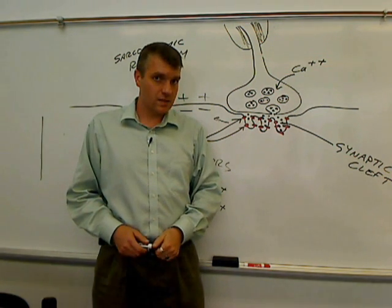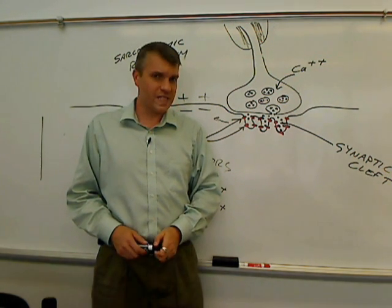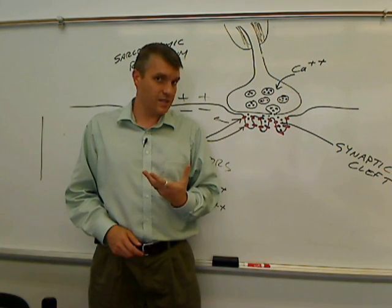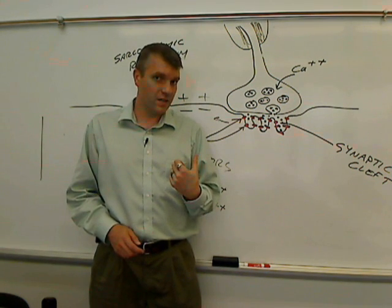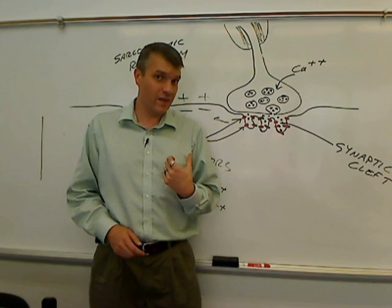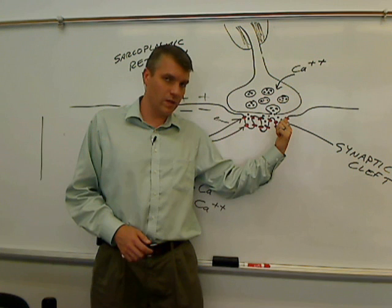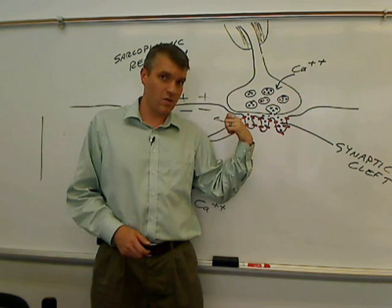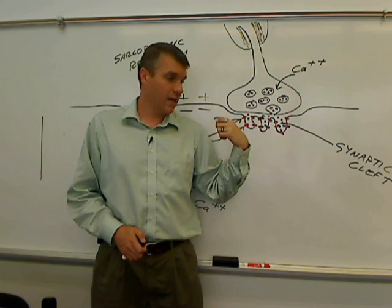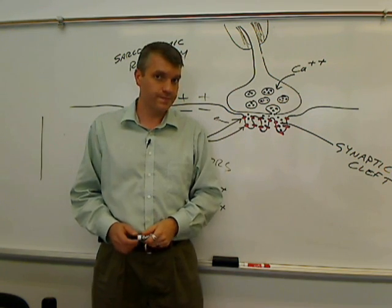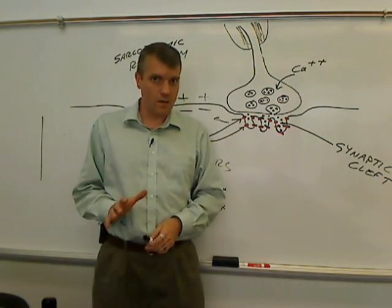Nerve gas, there's a nerve gas called sarin, and the action of this nerve gas is to inhibit acetylcholinesterase. That's the way that it works. If you inhibit acetylcholinesterase, you get a buildup of acetylcholine in the synaptic cleft, and you get muscles that don't stop contracting. And eventually it affects the muscles of breathing and the person suffocates. So don't forget acetylcholinesterase.